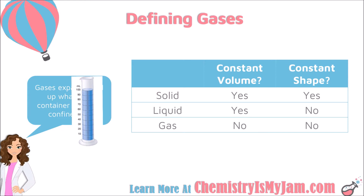Next, let's look at a sample of water, which I would identify as a liquid. Here I have 100 milliliters of water inside a graduated cylinder, so it has taken the shape of the graduated cylinder. If I transfer that 100 milliliters into a volumetric flask, I still have 100 milliliters of water — the volume has remained constant — however, it has changed shape to fill its new container. So the shape is not constant. A liquid has a constant volume but does not have a constant shape.